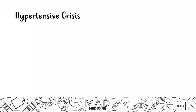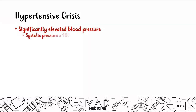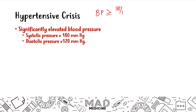One important thing to be aware of with MAOIs is hypertensive crisis. This can occur with MAOIs more than with any other antidepressant class. A hypertensive crisis is classified as a significantly elevated blood pressure with a systolic pressure greater than or equal to 180 and a diastolic pressure greater than or equal to 120 — this is a hypertensive emergency.